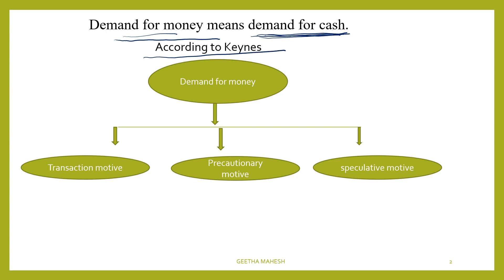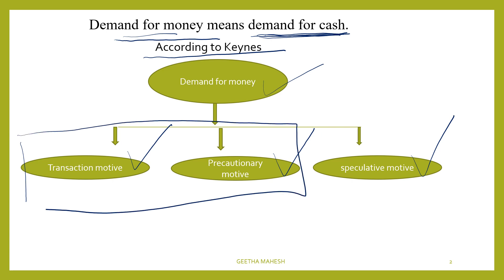Lord Keynes gave 3 reasons — that is how we have to demand for money. The demand for money is explained through three motives: the transaction motive, the precautionary motive, and the speculative motive.